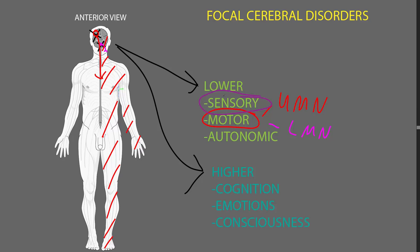Most of those pathways cross from one side to the other in the central nervous system, so that an abnormality of the right cerebrum will often cause somatosensory abnormalities on the left side of the body and abnormalities of vision in the left side of the visual field.